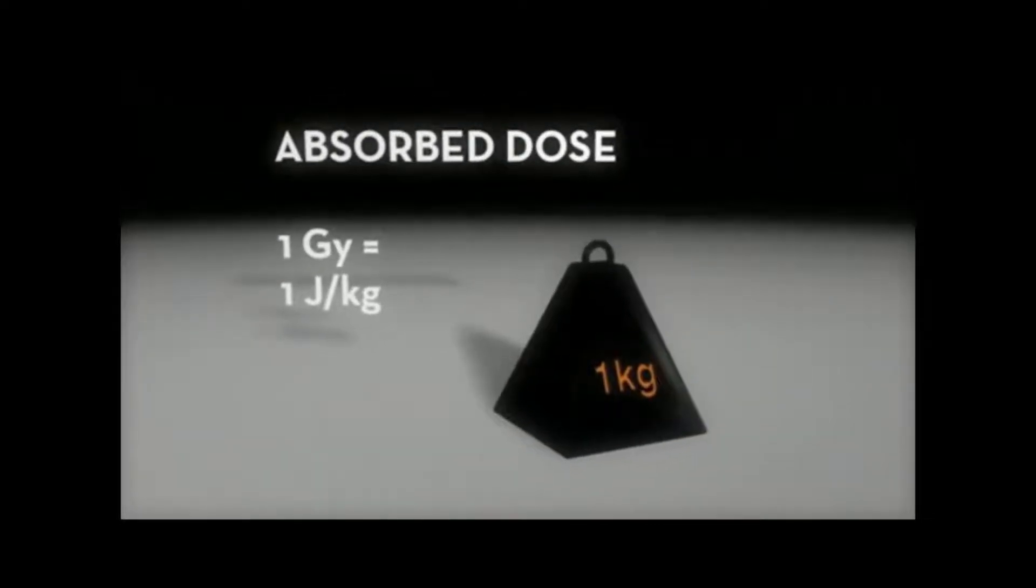Absorbed dose is the amount of energy released into the human being per kilogram of body tissue, and is measured in the unit of gray. One gray equals one joule per kilogram.